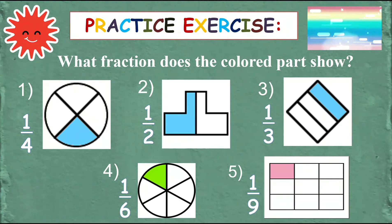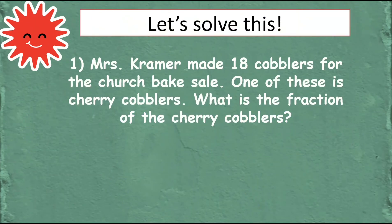Okay so we call these unit fractions. All right so let's try to solve this problem. Mrs. Kramer made 18 cobblers for the church bake sale. One of these is cherry cobblers. What is the fraction of the cherry cobblers? So you think first which one is the numerator, which one is the denominator.